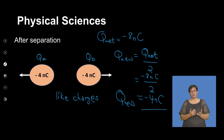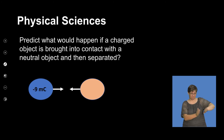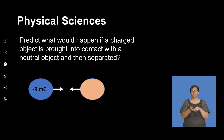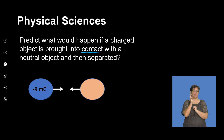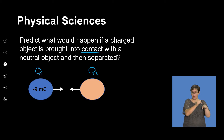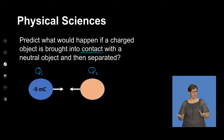Let's look at a different scenario altogether: a charged object brought into contact with a neutral one. Since there is contact, transfer of charge will take place. Let's label this one Q1 and this one Q2. Q1 is negatively charged — it has excess electrons. Q2 is neutral — it has a zero net charge.